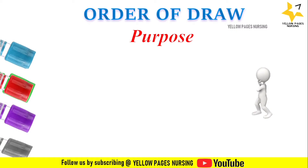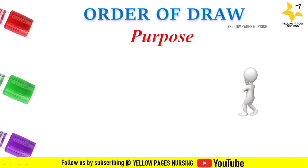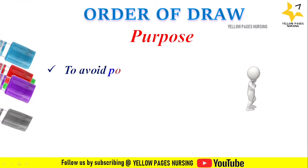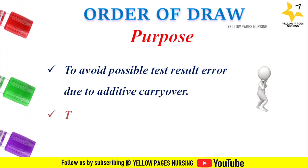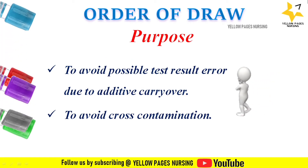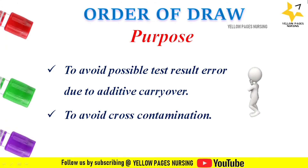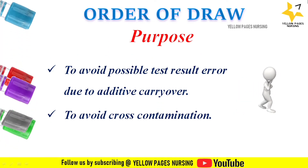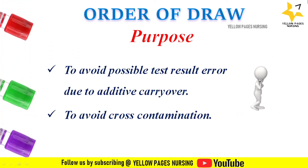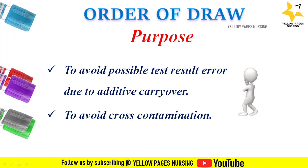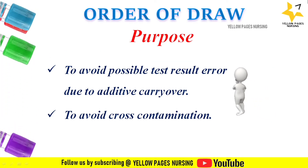Why do we collect blood samples in a specific order? The purpose is to avoid possible test result errors due to additive carryover and to avoid cross-contamination. This can be understood through a process called reflux, where chemicals can move from one tube into the needle, and when the next tube is activated it will contain the previous chemical, causing contamination. For example, vacutainers contain different chemicals like sodium citrate, fluoride, and heparin.